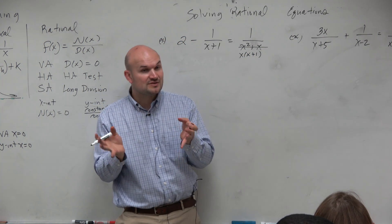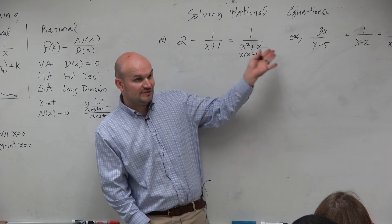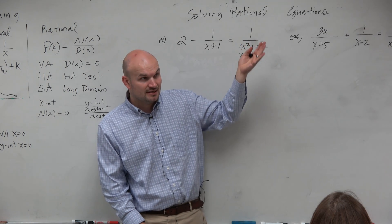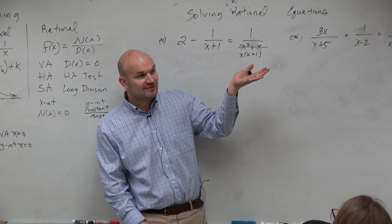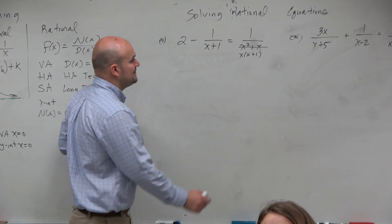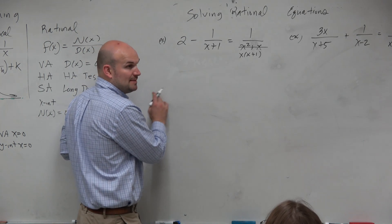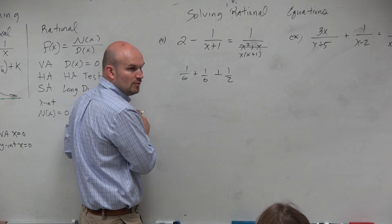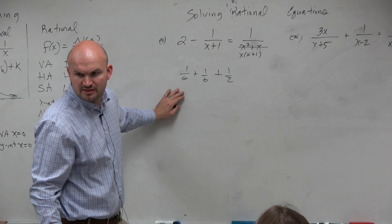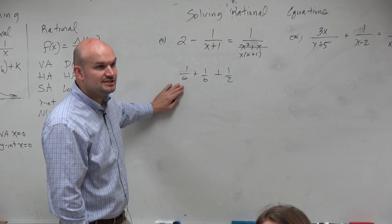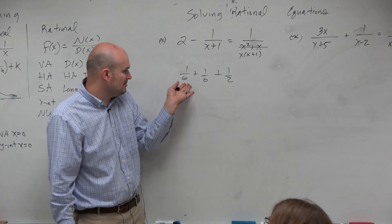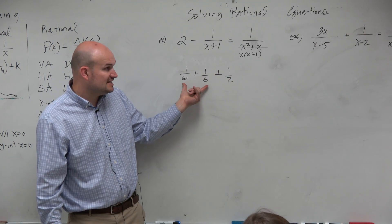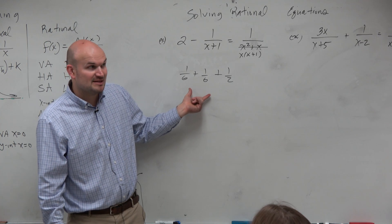So we have x times x plus 1. Factor out an x, right? That's a great start because what that helps us do is if we want to get rid of our denominators, we want to multiply everything by an expression that all the denominators divide into, which we call the least common denominator. So what's important about this is remember that example where I had the 1 over 6 plus 1 over 6 plus 1 half, like when we're trying to find the least common multiple.